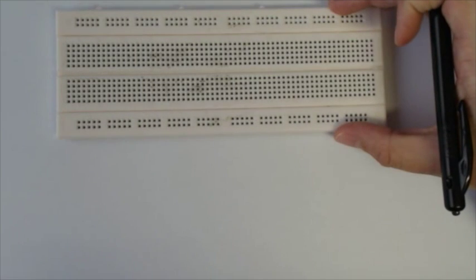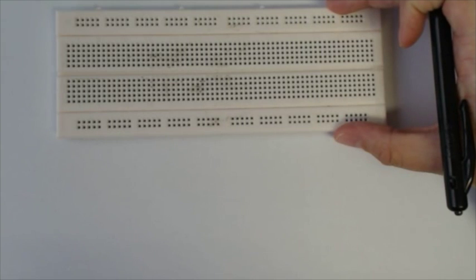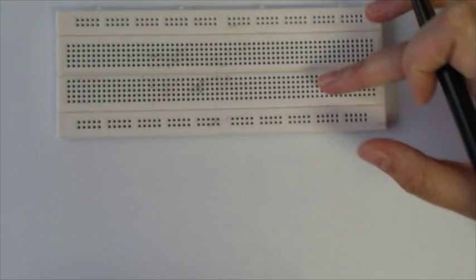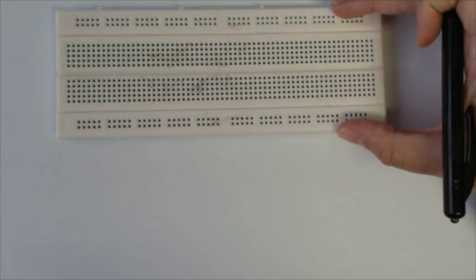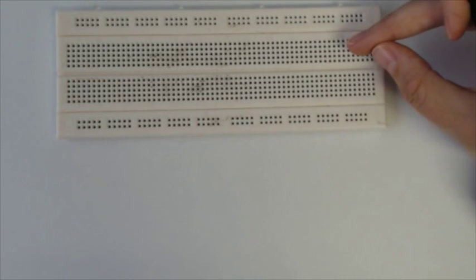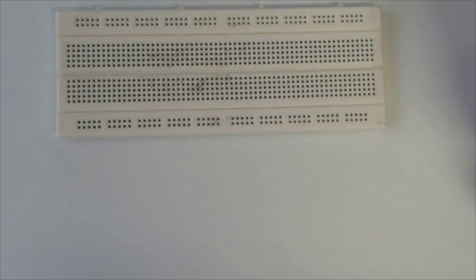This is an example of the breadboard that you'll be using in the practicals this semester. You can see that it consists of three sections, two outside sections or rails and the center section that is further divided up into two parts.